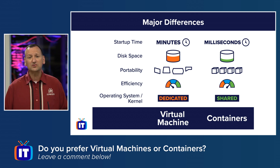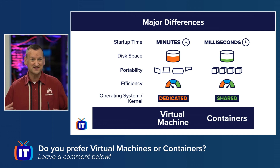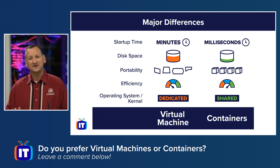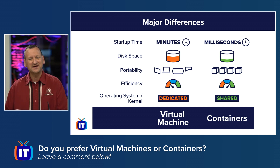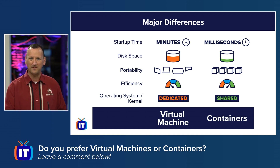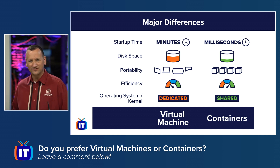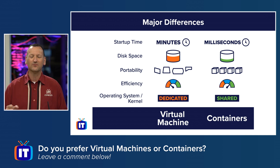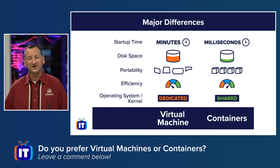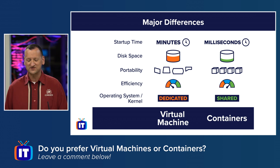Portability: virtual machines can move between hardware, assuming that hardware is running the same hypervisor. But with containers, most container services out there are compatible with Docker containers. That means I can write a Docker container and run it on my laptop, on a server here in the building, or in the AWS cloud or Microsoft Azure. Very portable, very easy to move around — we don't really have that with virtual machines.